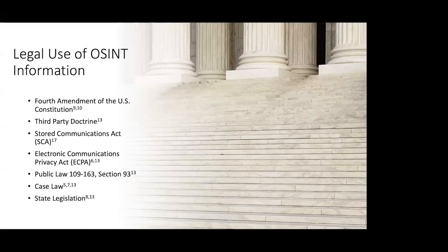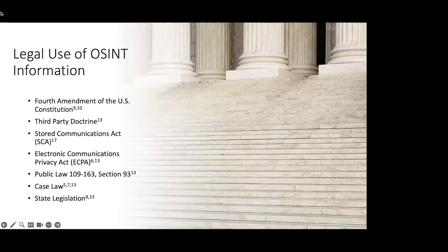Third party doctrine, established in cases like Smith v. Maryland, holds that information voluntarily shared with a third party — like a phone company or a bank — carries a reduced expectation of privacy and can be accessed by law enforcement. That's been used in the New York area specifically when a friend of a subject of investigation willingly disclosed information the subject posted on their social media account, considered valid under third party doctrine. Part of the Electronic Communications Privacy Act — the Stored Communications Act — governs access to stored electronic communications data. It lets law enforcement access certain communications data stored by third party service providers, sometimes requiring a warrant or subpoena. However, some loopholes in the ECPA have been interpreted to allow law enforcement to acquire that data without legal process like warrants or subpoenas.